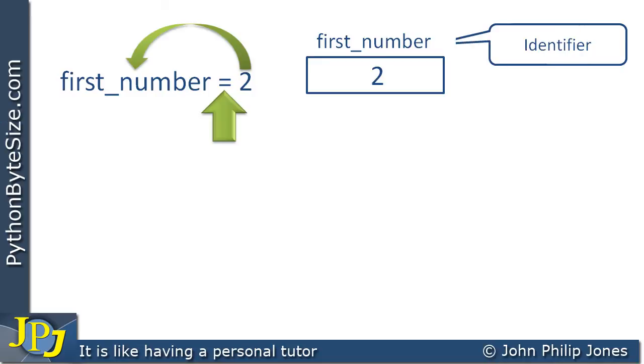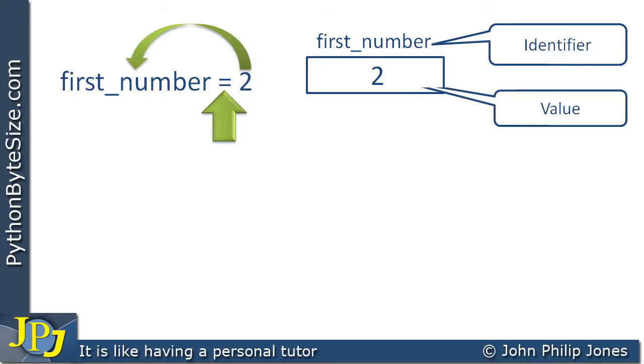So there's the variable. This is the identifier, and this here is the value that's stored in the identifier.